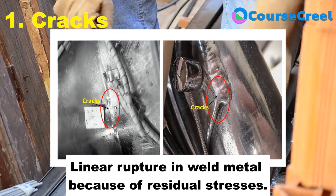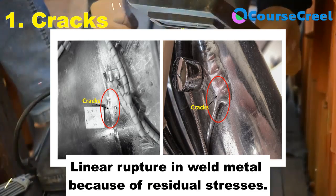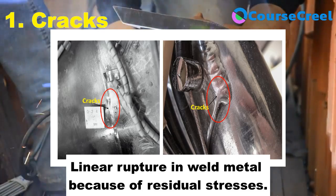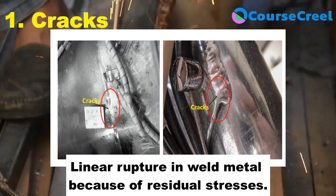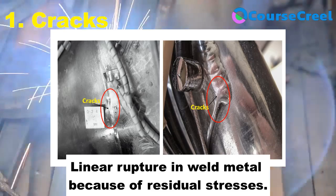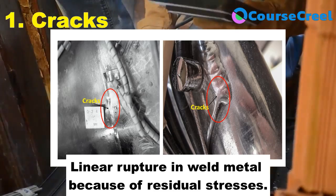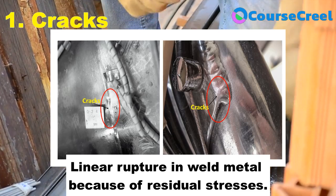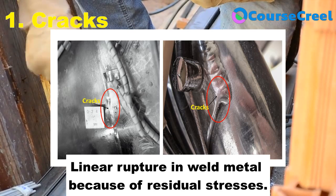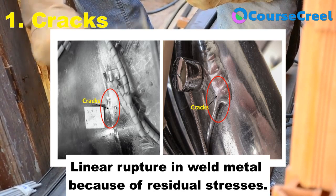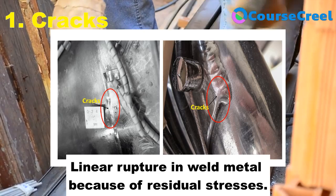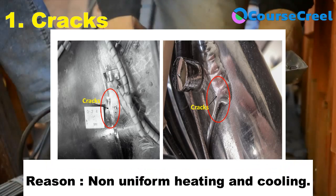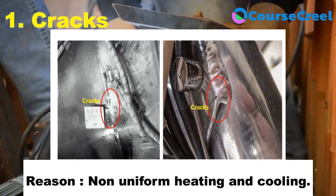The first type of metallurgical welding defect is cracks. Cracks are the most common type of welding defect and are considered linear ruptures in metal caused by residual stresses. Residual stresses are stresses that remain in an object — especially in a welded component — even in the absence of external loading or thermal gradients. Because of these residual stresses, cracks may develop in the weld metal.